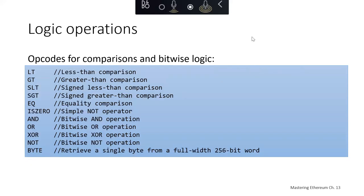From a logic operations perspective, we've got operation codes for comparison and bitwise logic. We've got a less than comparison, a greater than comparison, a signed less than comparison, a signed greater than, an equality comparison, a simple NOT operator which is just IS_ZERO, an AND and OR operator, an XOR or NOT operator. XOR is exclusive OR. And then we've got to retrieve a single byte from a 256-bit word operator.